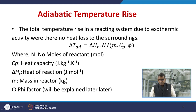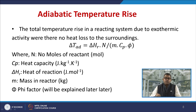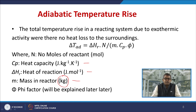Let us look at the adiabatic temperature rise — the total temperature rise in the reaction system due to exothermic activity with no heat loss to the surroundings. It is given by: ΔT_adiabatic = ΔHᴿ × n / (m × Cp × φ), where n is the number of moles of reactant, Cp is the heat capacity (J·kg⁻¹·K⁻¹), m is the mass in the reactor (kg), and the phi factor φ will be explained in subsequent slides.